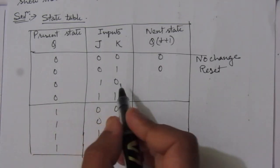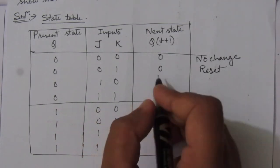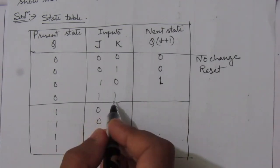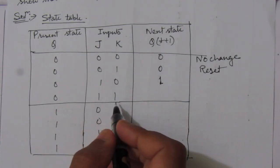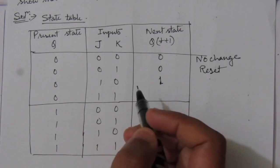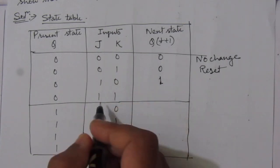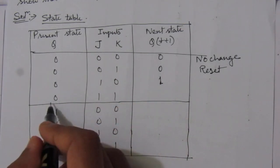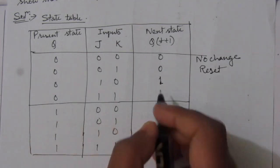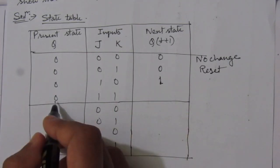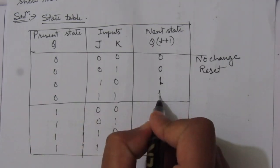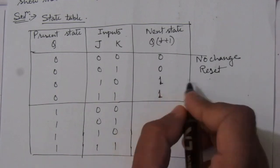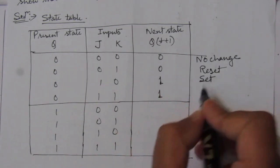Then when J is one and K is zero, the output is set. Next, when we have one-one input at the J and K inputs of a JK flip-flop, we will have the complement of the previous state. So here the present state is zero, so we'll have the complemented value, which is one.